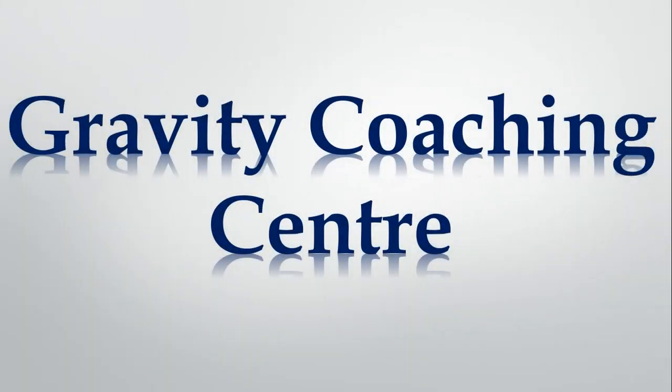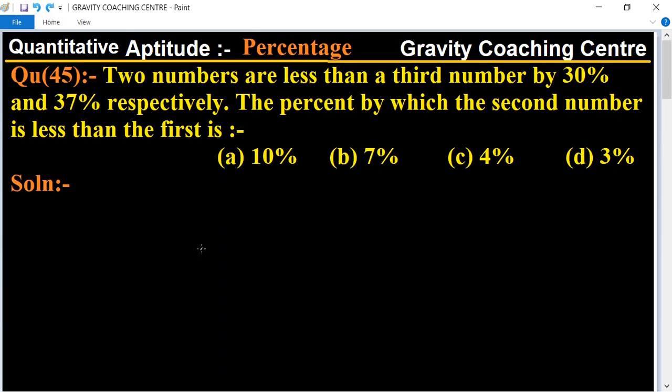Welcome to our channel Gravity Coaching Centre. Quantitative Aptitude, chapter Percentage, Question number 45. Two numbers are less than a third number by 30 percent and 37 percent respectively. The percent by which the second number is less than the first is...